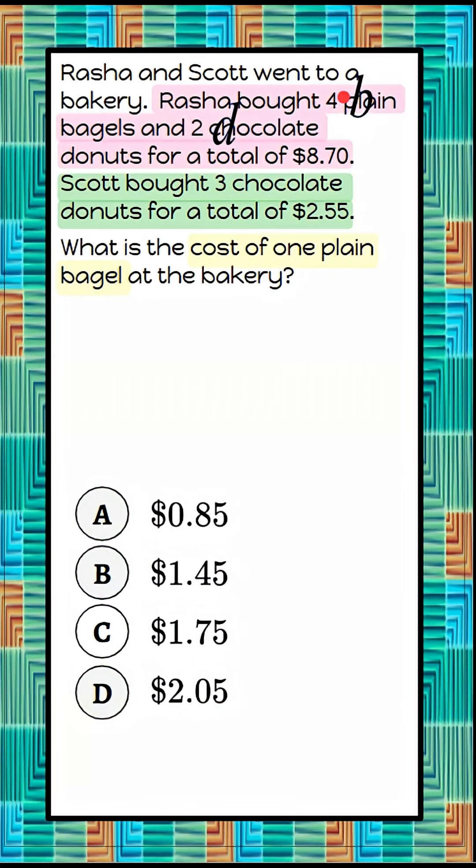So when we write the equation to represent Rasha's purchase, we're going to do 4B plus 2D equals $8.70. Four bagels, so four times the cost of one bagel, add two times the cost of one donut equals $8.70.